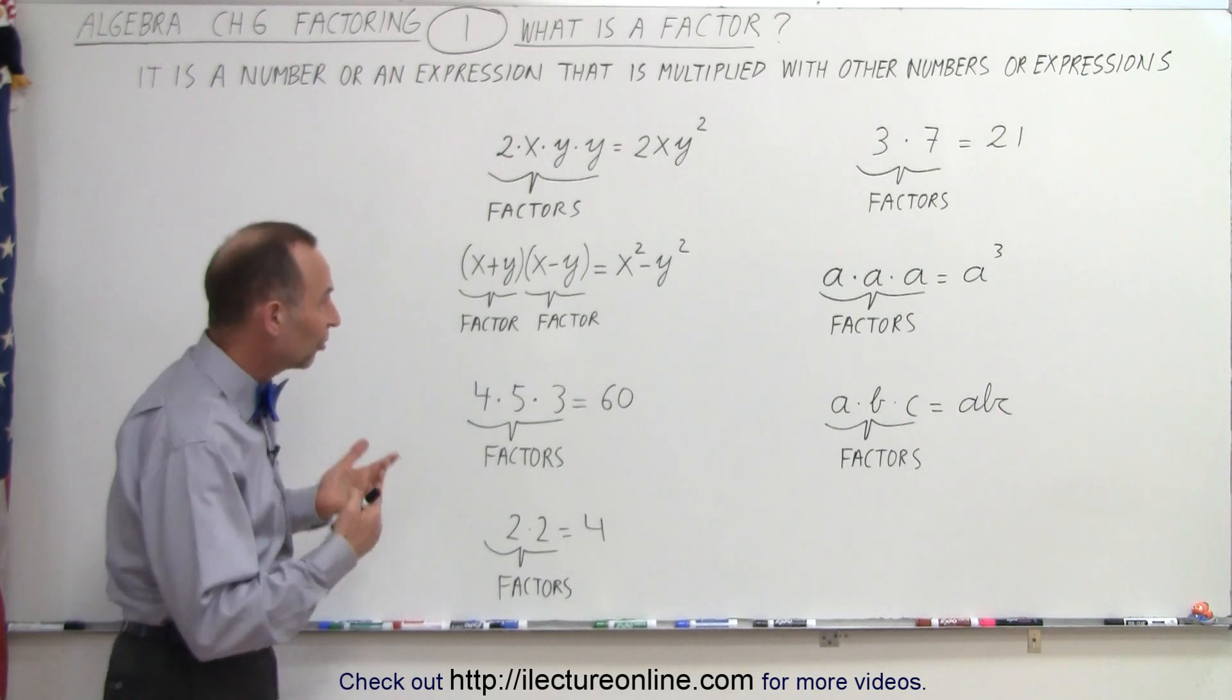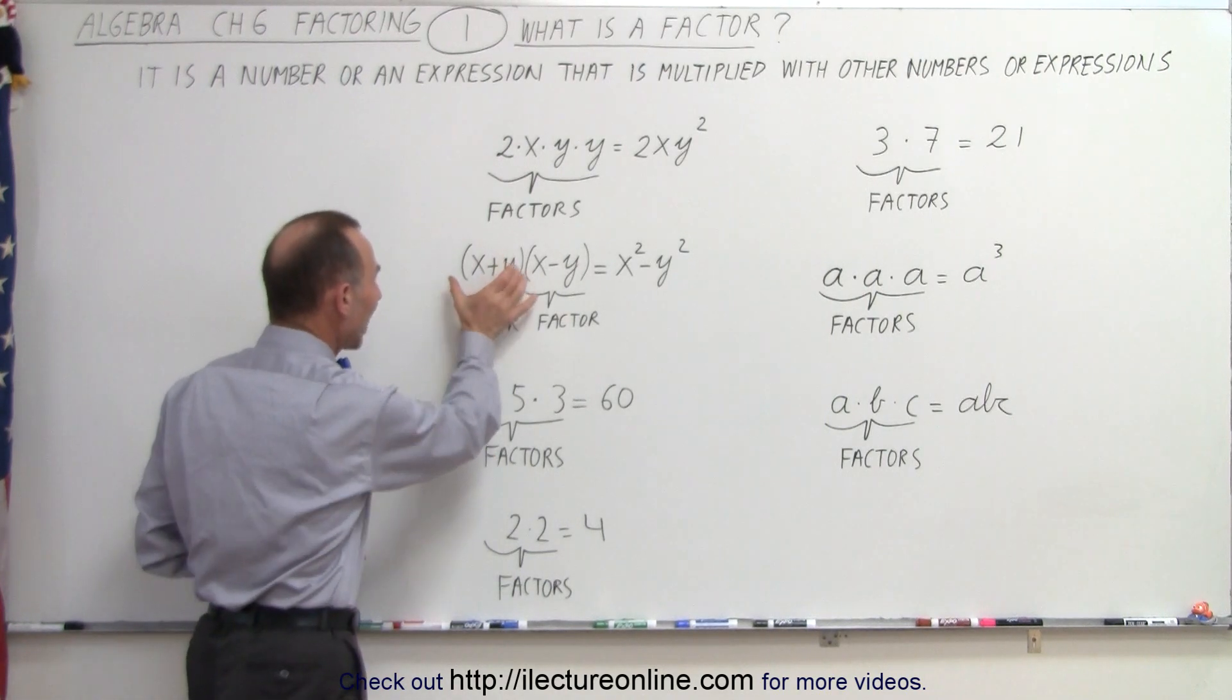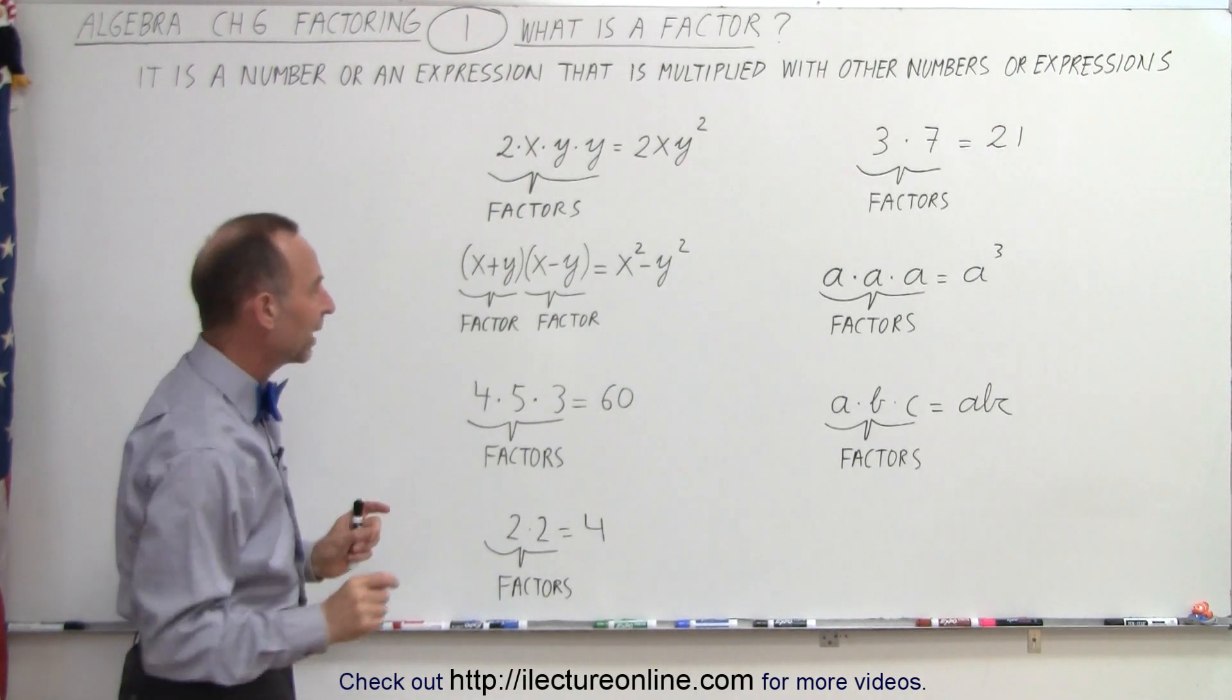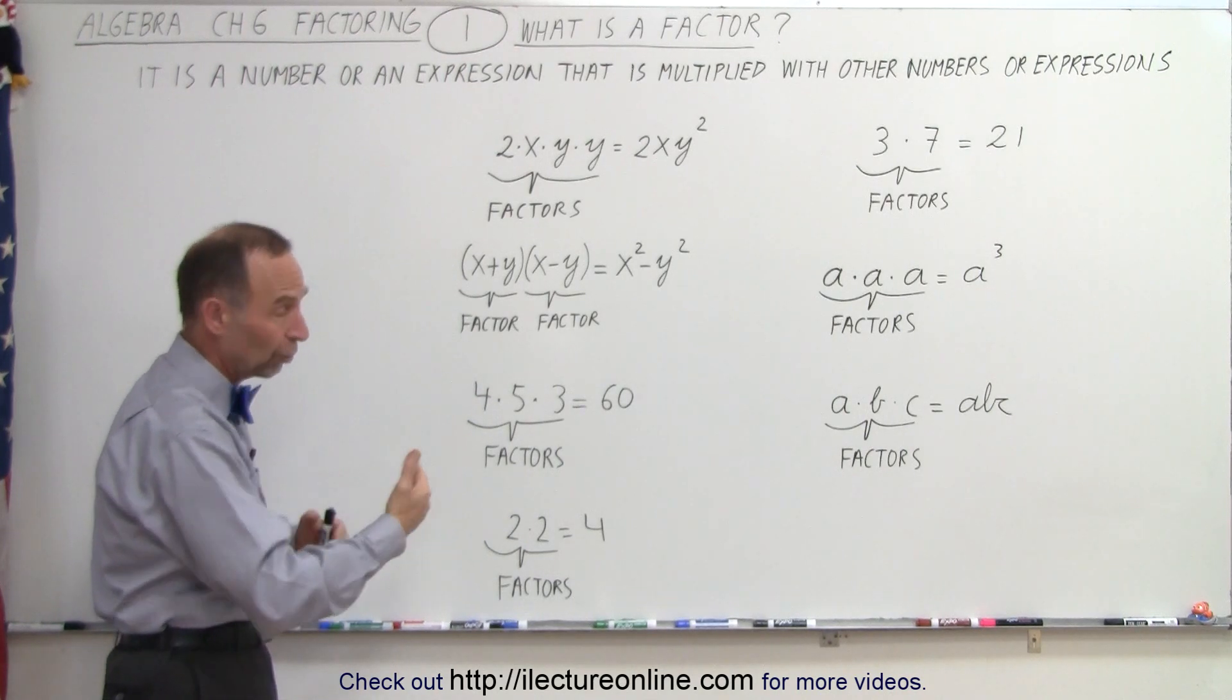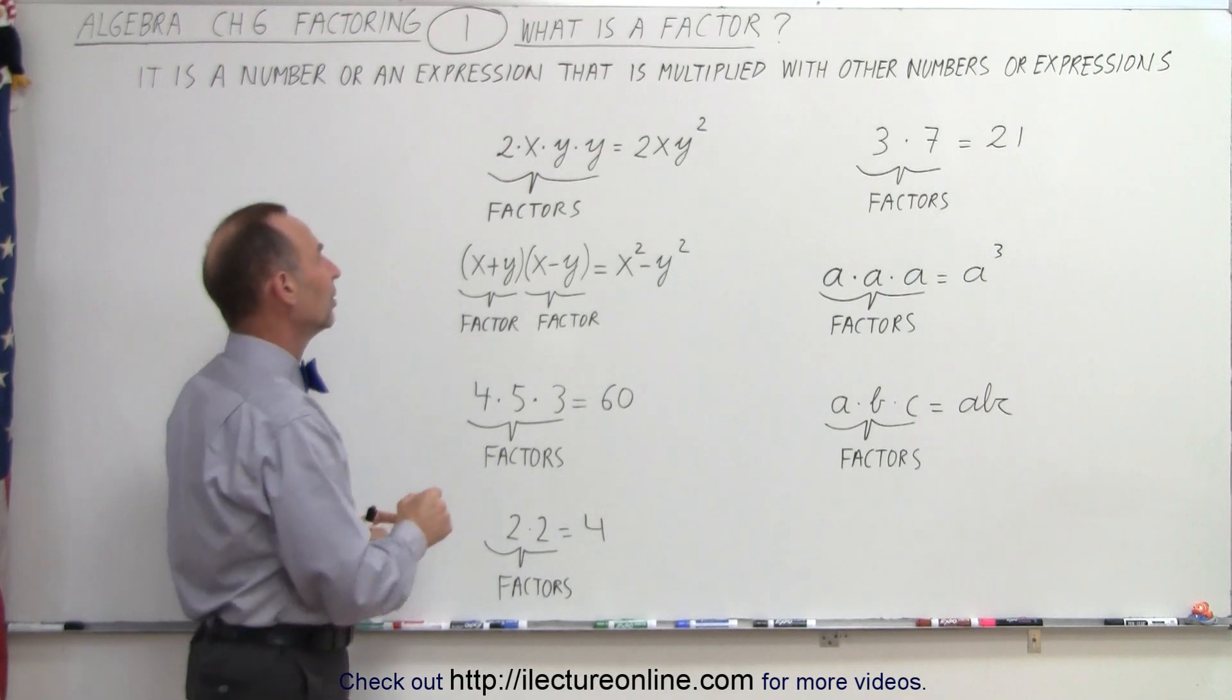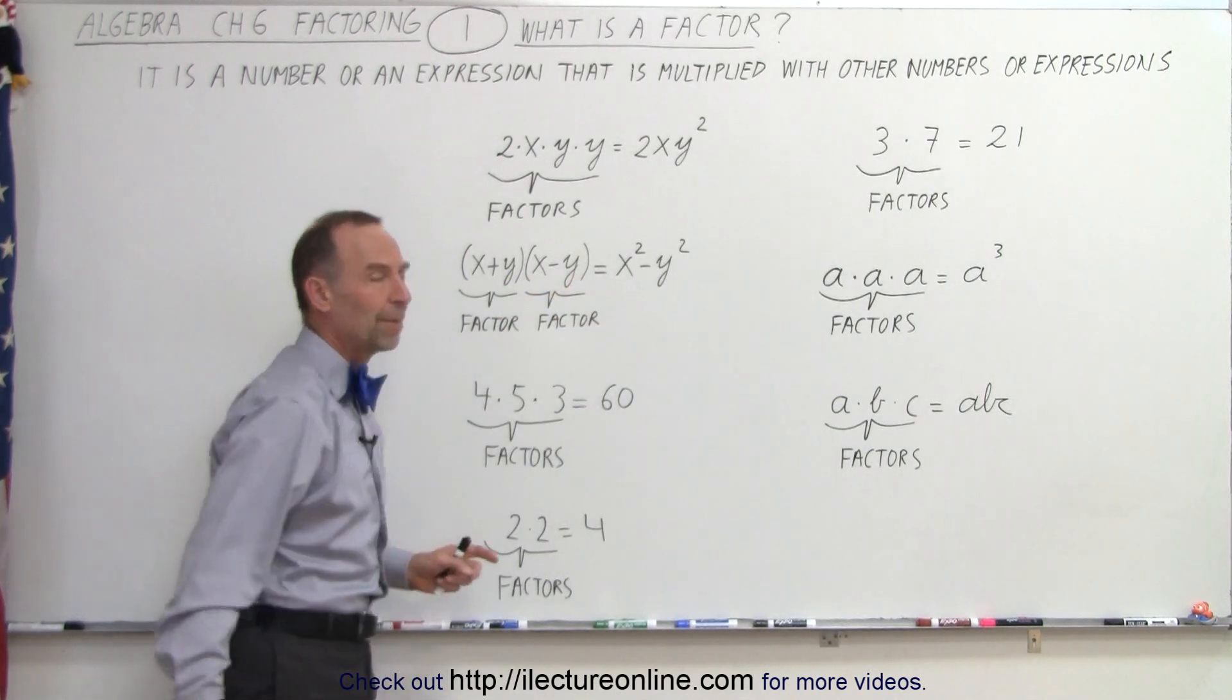Now we're going to get into things such as this where we're multiplying binomials together. It turns out that each binomial itself is a factor. So X plus Y is a factor, X minus Y is a factor because they're multiplied together. Whenever we're multiplying things together, things being numbers, expressions, binomials, or trinomials, whatever they may be, they become factors when we multiply them together. So X plus Y times X minus Y gives us X squared minus Y squared.